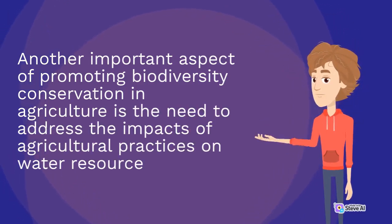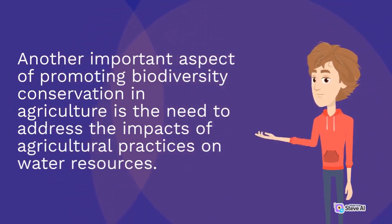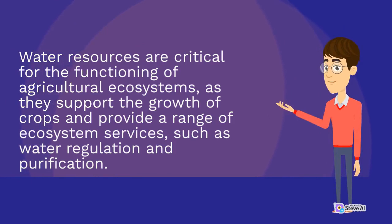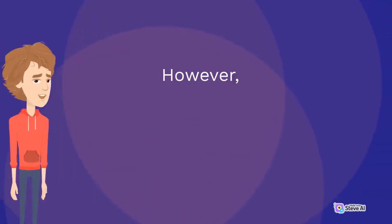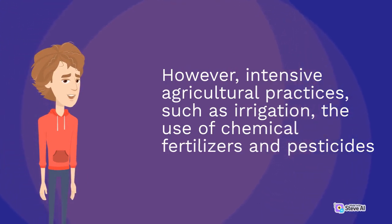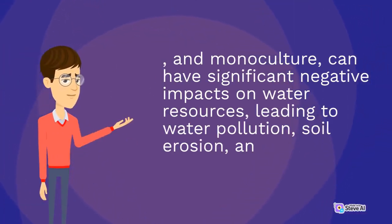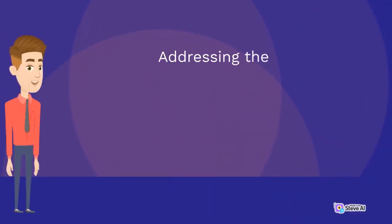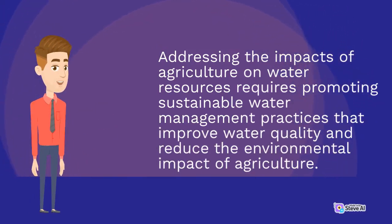Another important aspect of promoting biodiversity conservation in agriculture is the need to address the impacts of agricultural practices on water resources. Water resources are critical for the functioning of agricultural ecosystems, as they support the growth of crops and provide a range of ecosystem services, such as water regulation and purification. However, intensive agricultural practices, such as irrigation, the use of chemical fertilizers and pesticides, and monoculture, can have significant negative impacts on water resources, leading to water pollution, soil erosion, and depletion of groundwater resources. Addressing the impacts of agriculture on water resources requires promoting sustainable water management practices that improve water quality and reduce the environmental impact of agriculture.